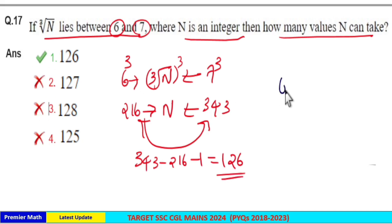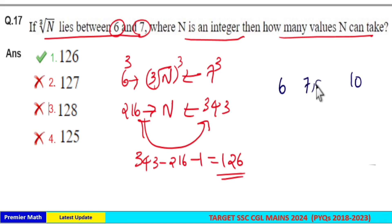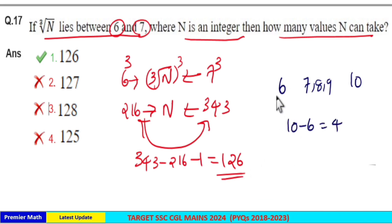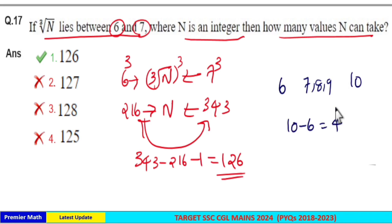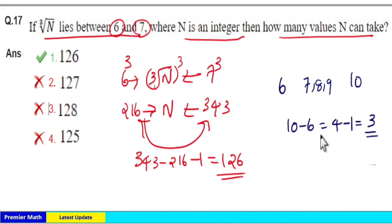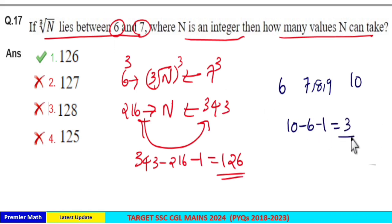To understand why we subtract 1: if you take the integers strictly between 6 and 10, you get 7, 8, and 9 — that's 3 terms. If you just do 10 minus 6 you get 4, but that includes the 10th term itself, so you subtract one more, giving 10 minus 6 minus 1 equals 3 terms.